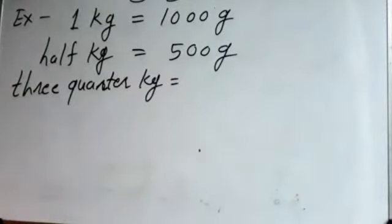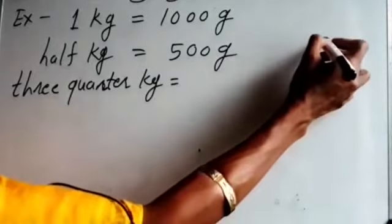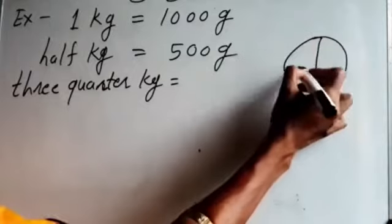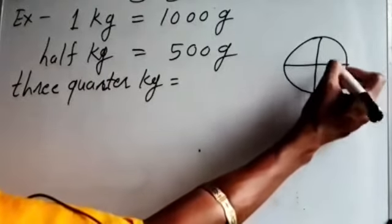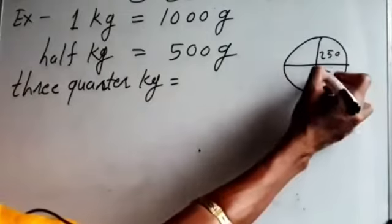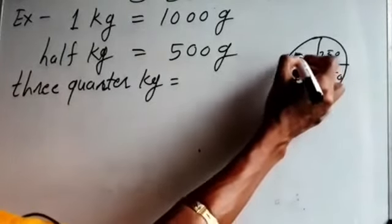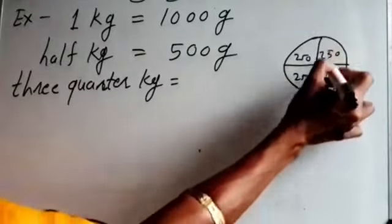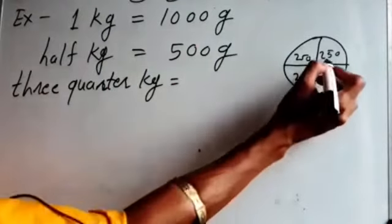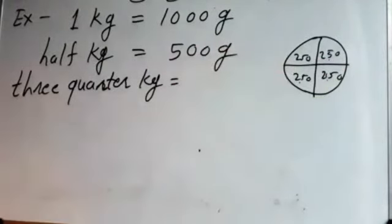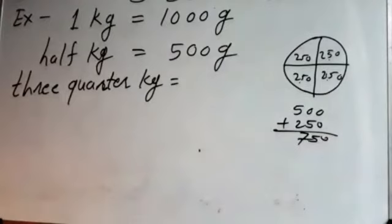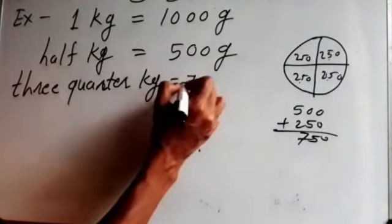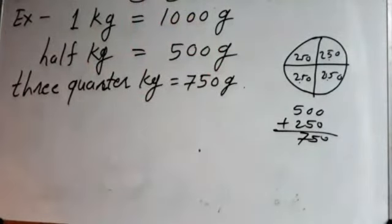Three-quarter kilogram means what? Suppose the full is 1000. If I do four parts of this, each part will be 250. Half means 500 gram. Three-quarter means 250 plus 250 plus 250, so 500 plus 250 is 750. Three-quarter kilogram is equal to 750 gram.